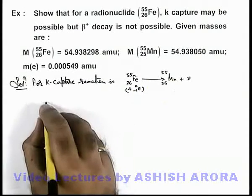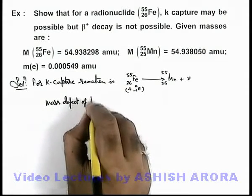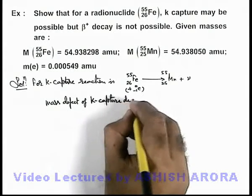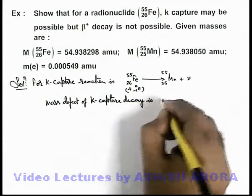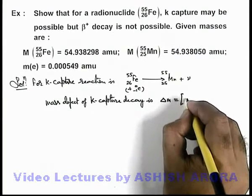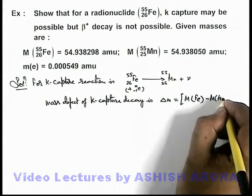We know that the mass defect of K-capture decay is: delta M equals mass of iron minus mass of manganese.